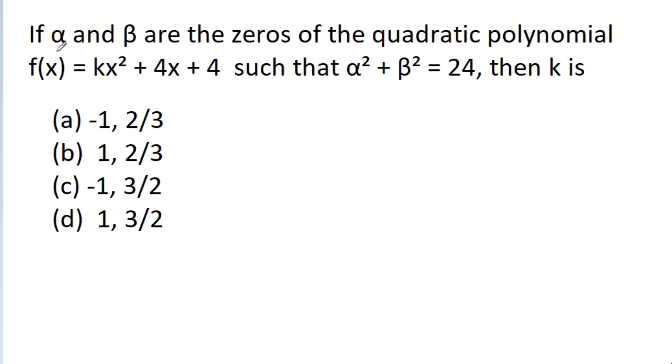In this video, we are given that alpha and beta are the zeros of the quadratic polynomial f(x) = kx² + 4x + 4 such that α² + β² = 24. Then we have to find the value of k.